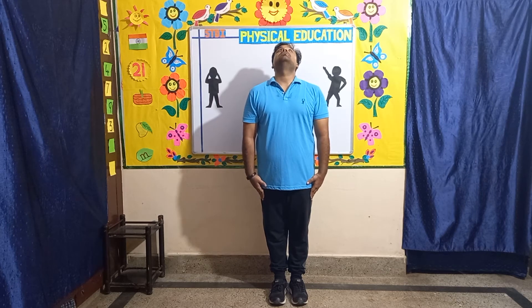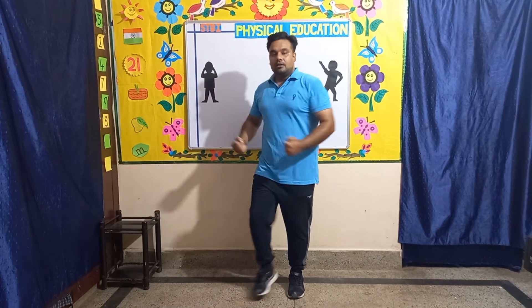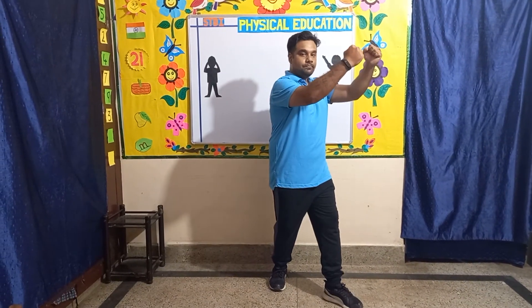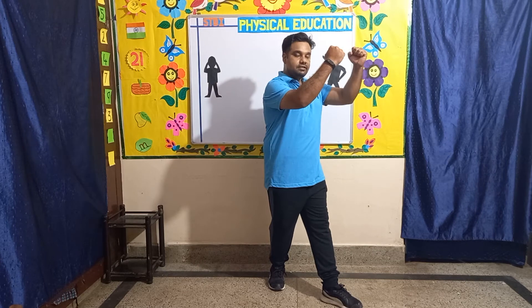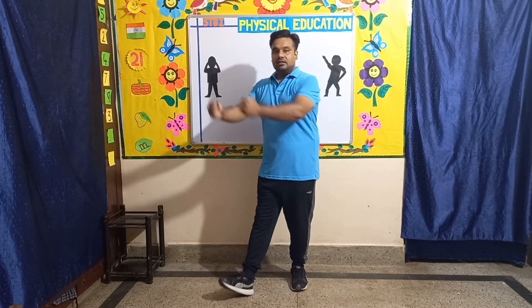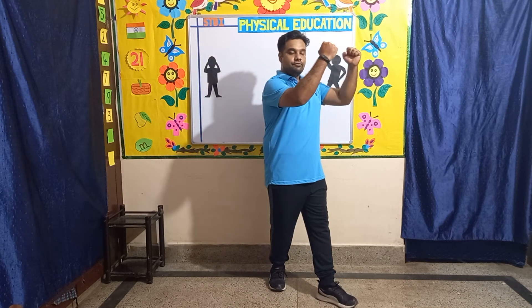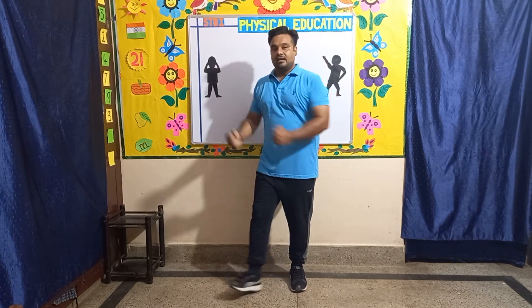Four, three. Next, change. Exercise number seven: ski. In this exercise, children, bring your hands to the side like this. Put one step forward with the left leg, then back, and the same with the right leg, then back. Let's start: one, two, three, four, five, six, seven, eight, seven, six, five, four, three. Next, change.